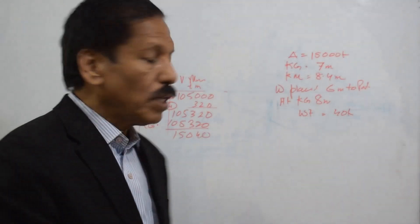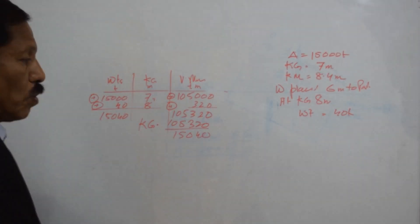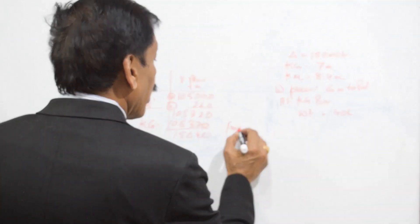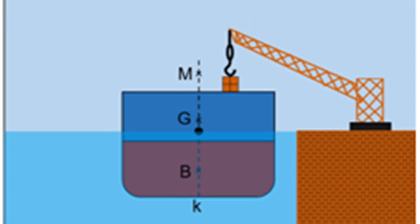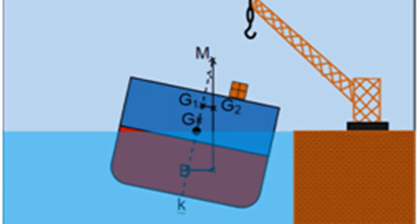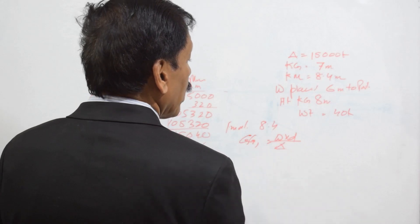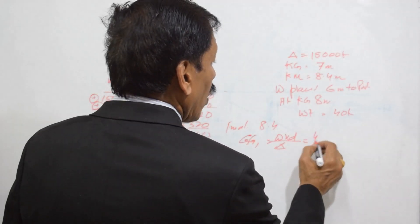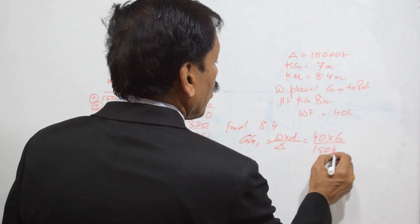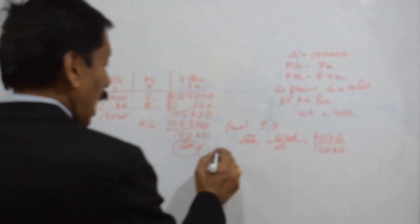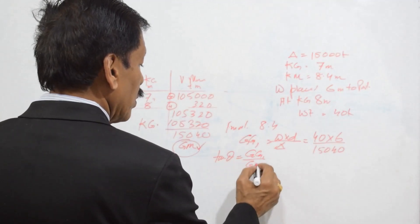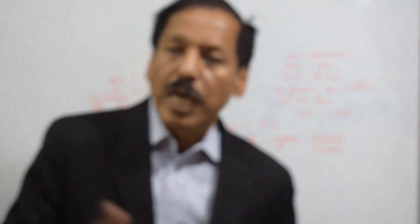Final KG equals 105,320 divided by 15,040. Assuming that KM does not shift — KM does not change for small values of loading or discharging — we get the final KM remaining the same at 8.4 meters. The difference of KM and KG gives GM. GG1 equals W into D divided by displacement, which is 40 multiplied by 6 divided by 15,040. This gives GG1, and therefore we can find out the list as tan theta equals GG1 upon GM.